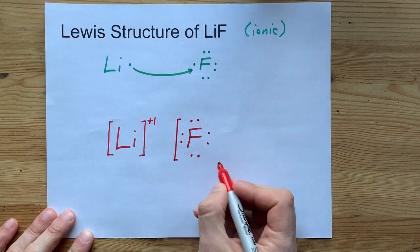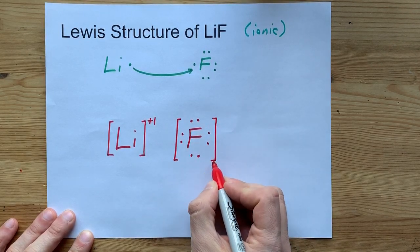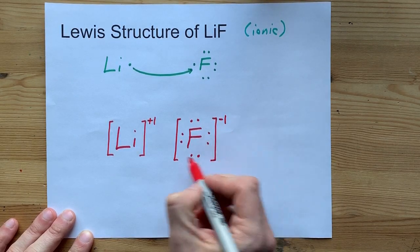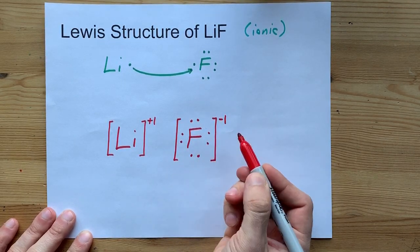And because it has an extra electron, it gets square brackets with a minus one charge. The square brackets are there to indicate that it is an ion.